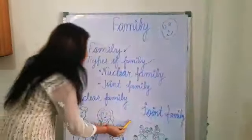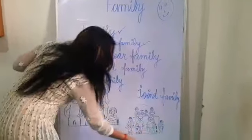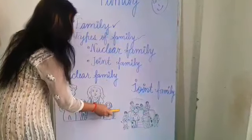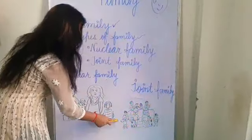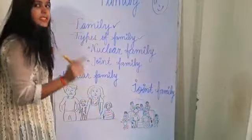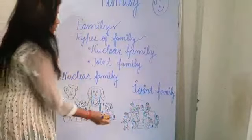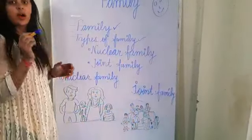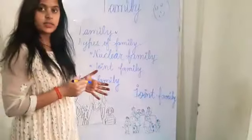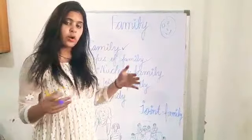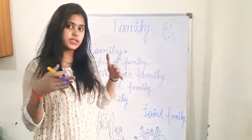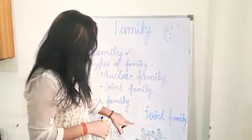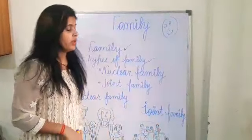Now look at this picture. In this picture, there are so many members living in the same house — grandparents, parents, uncle, aunt, cousins, and children all live in the same house. It is called the joint family.